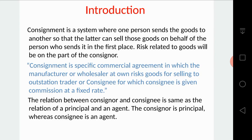So what is Consignment? Consignment is a system where one person sends goods to another, so that the latter can sell those goods on behalf of the person who sends them in the first place. The risk related to such goods will be on the part of the consigner. There are two parties involved — one who is sending, and one who is receiving. These risks are always borne by the consigner only, and not the consignee.